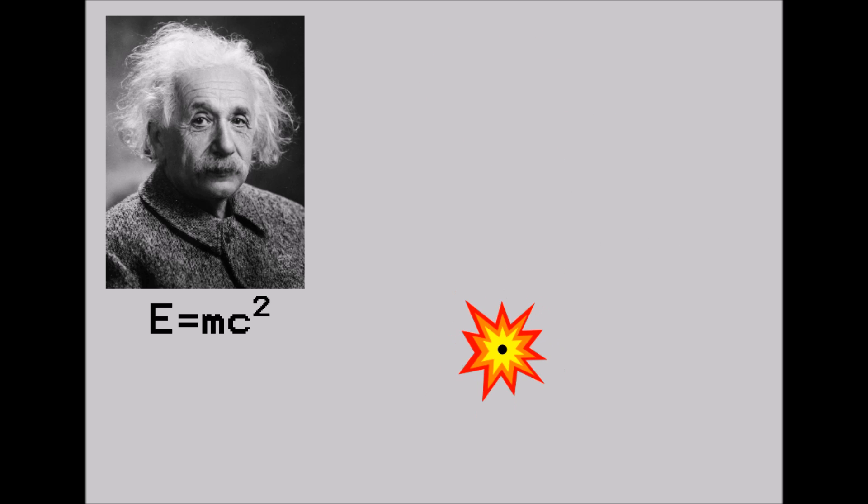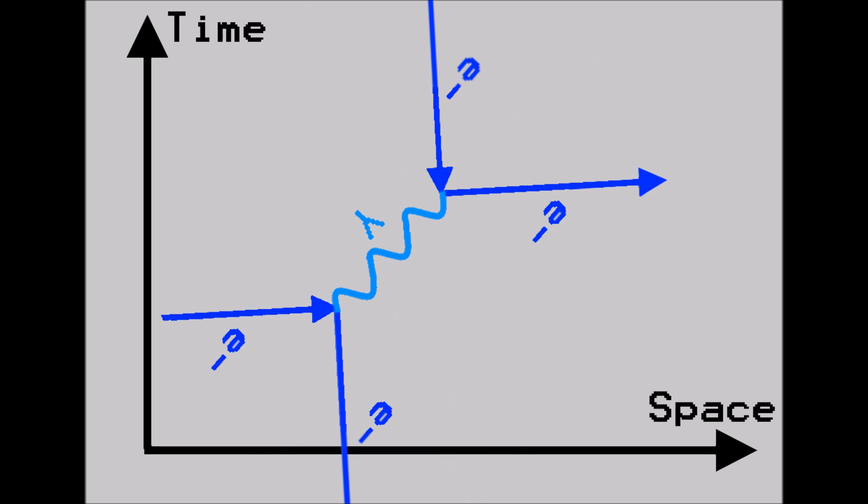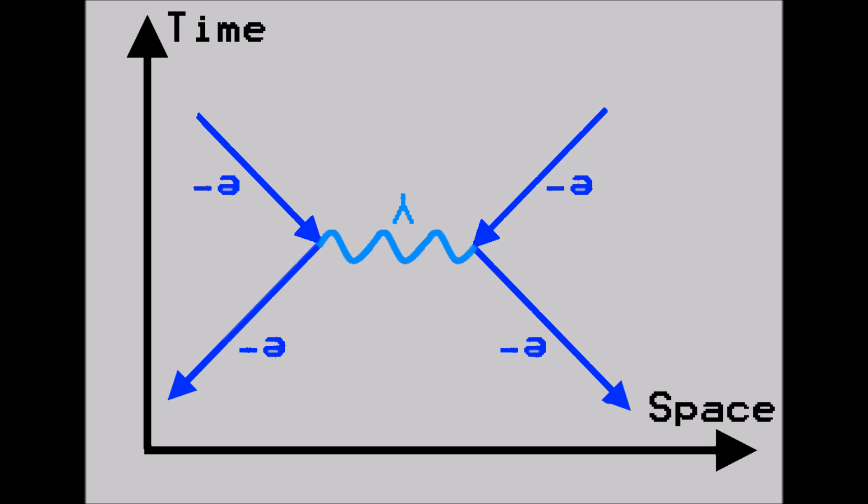Rotating the diagram a full 180 degrees from its original position demonstrates another more obvious feature of positrons – they mutually repel each other just like the electrons did.